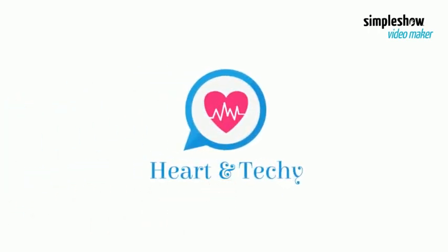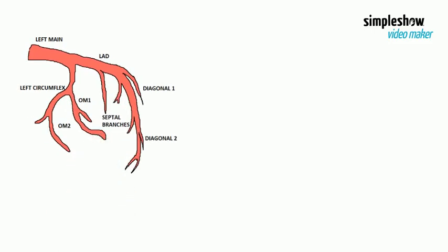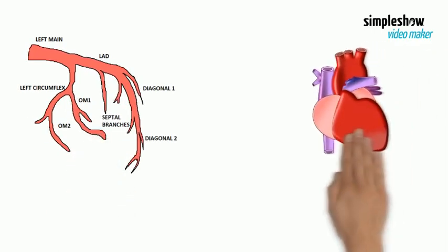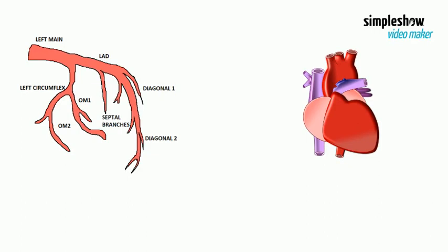In this video, we are going to study about left coronary artery anatomy. The left coronary artery arises from the aorta within the left cusp of the aortic valve and feeds blood to the left side of the heart. It branches into two arteries: the left anterior descending and the left circumflex.